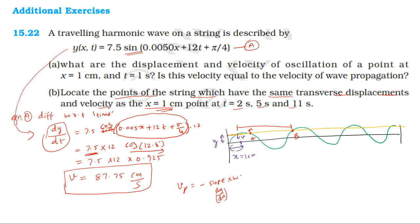Wave velocity is constant. At point A the slope is negative, so particle velocity is positive. At point B the slope is positive, so particle velocity is positive in the corresponding direction. The displacement at certain points along the wave is the same, and so is the velocity.